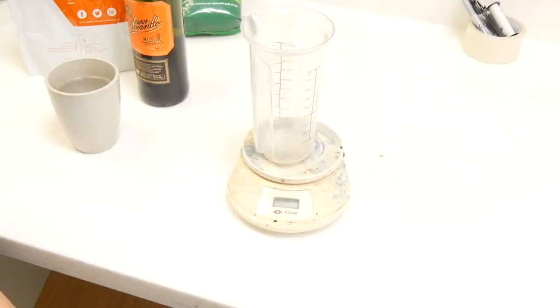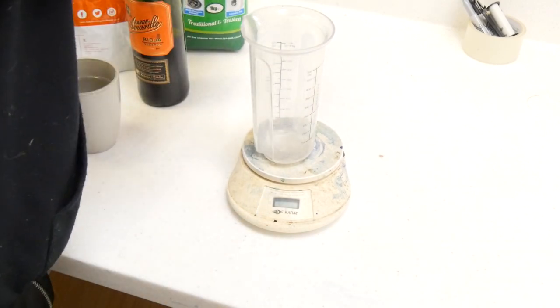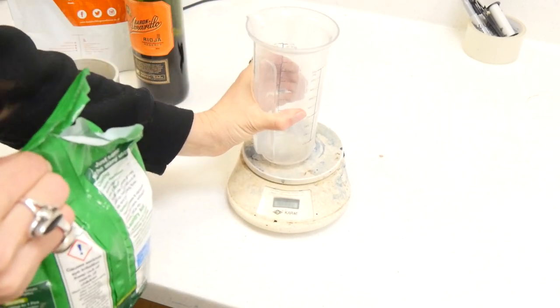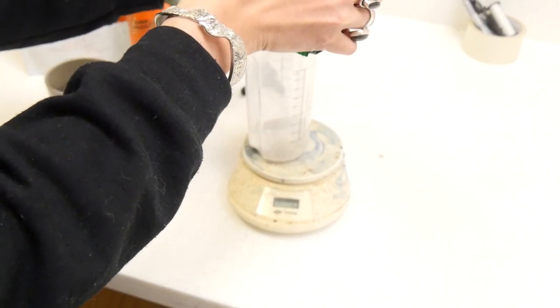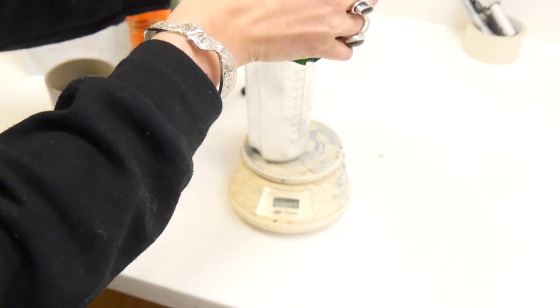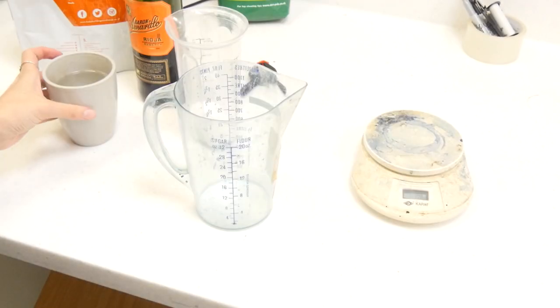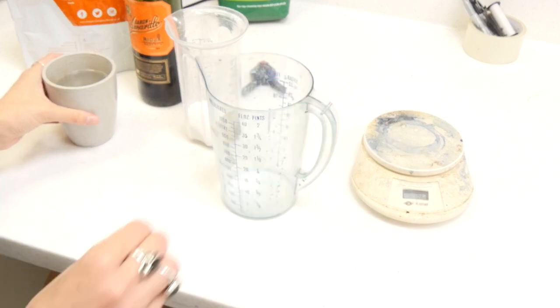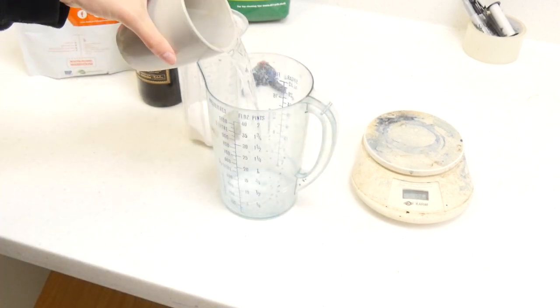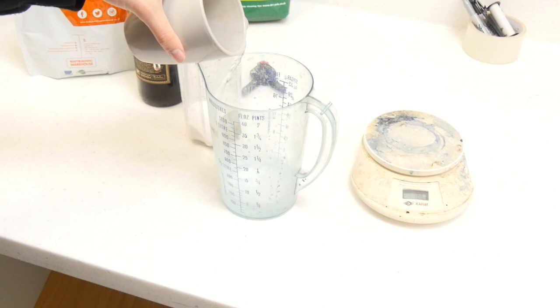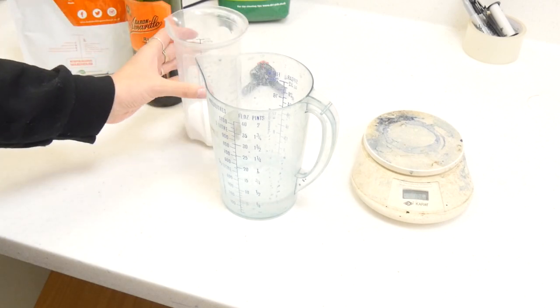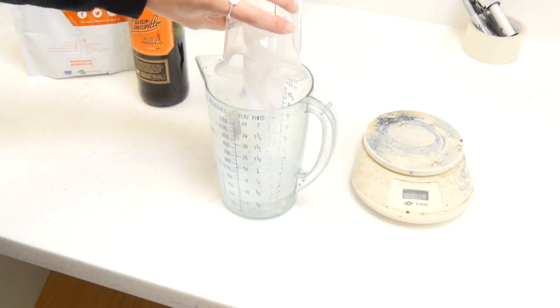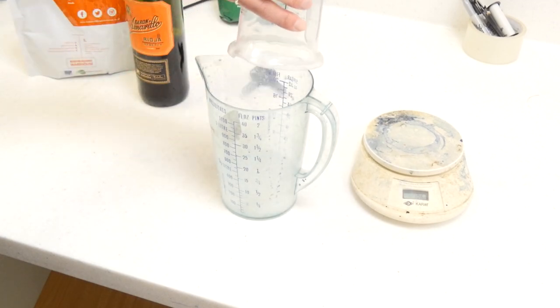So the first thing that I'm going to do is measure out 40 grams of soda crystals. Now I'm going to pour out 150ml of hot water, which I've just boiled. The soda crystals will go into the water and we'll mix that until they are fully dissolved.